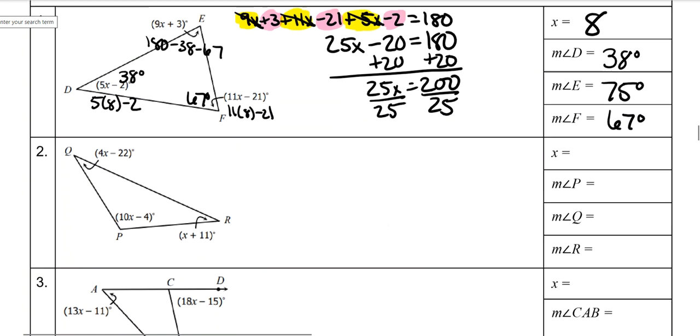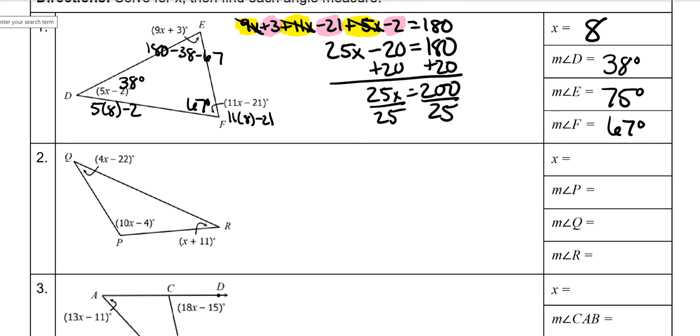Same concept. All the angles added together equal 180. You could also combine like terms here. So 4 plus 10 is 14 plus another x is 15x. Negative 22 minus 4 is negative 26 plus 11 would be negative 15.